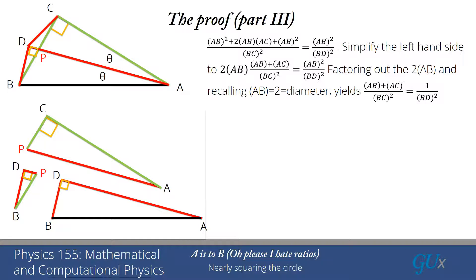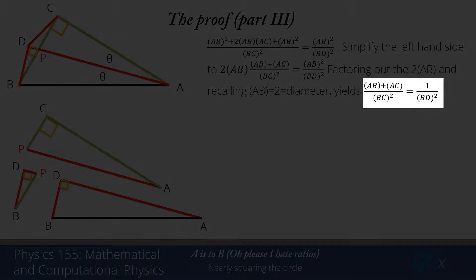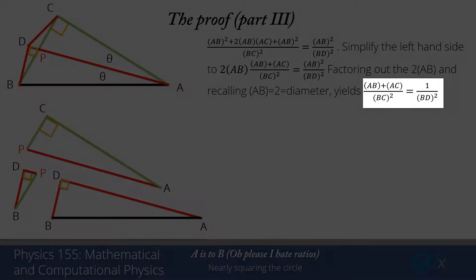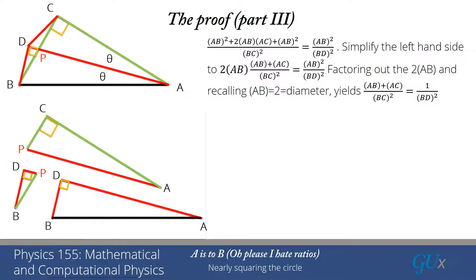But now we recall AB is the diameter. And it was a radius 1 circle. So AB is equal to 2. So 2AB is just equal to 4. And AB squared on the right-hand side also just equal to 4. So I can cancel those two factors of 4 out. And I'm left with AB plus AC divided by BC squared is equal to 1 divided by BD squared.